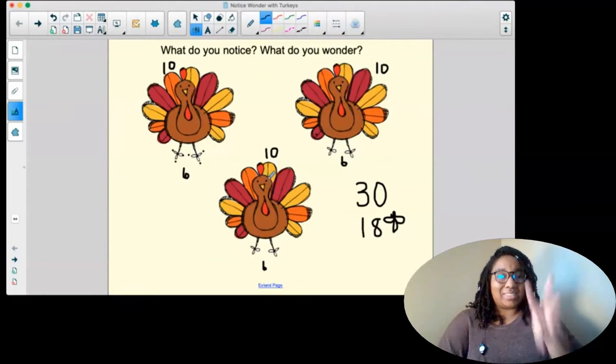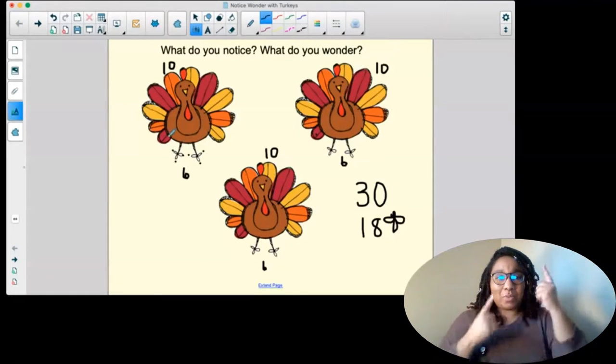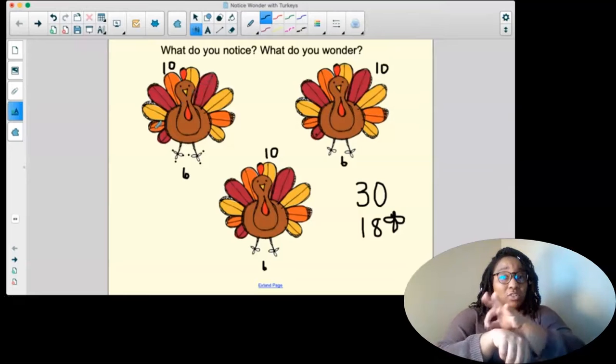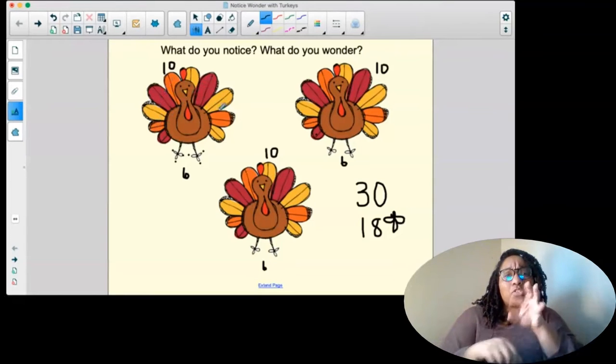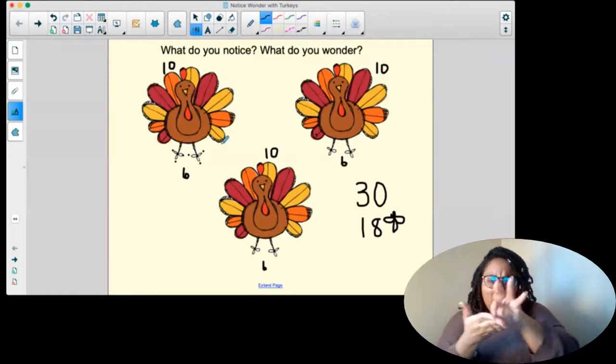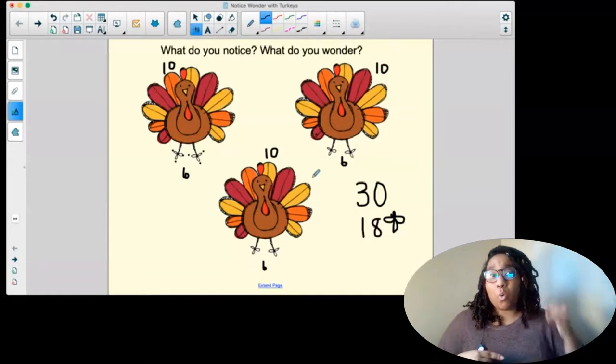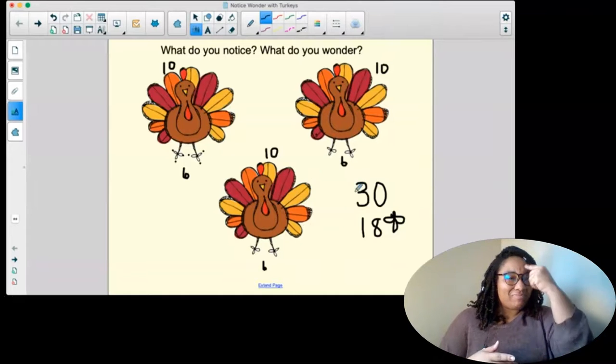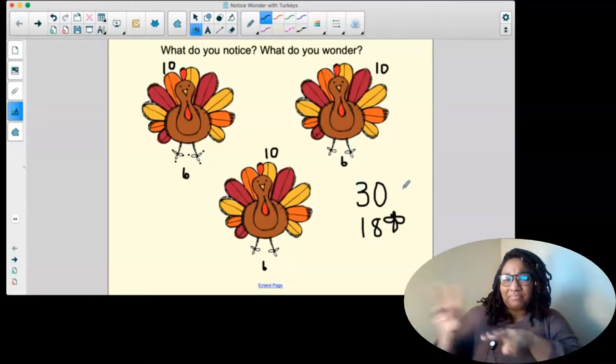Oh my goodness. There's so many things to notice and wonder. Did anyone count up how many red feathers there were? And how many orange feathers there were? And how many yellow feathers there were? Or maybe you're even thinking about that as gold feathers? There are so many things we can think about from one picture. I hope you got really creative on what you thought about.